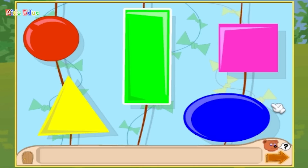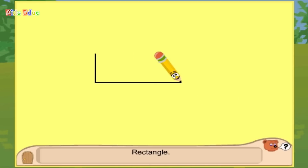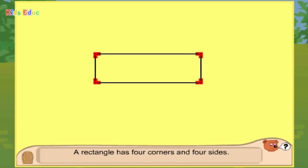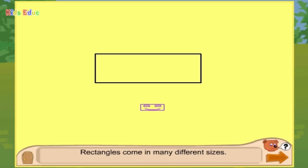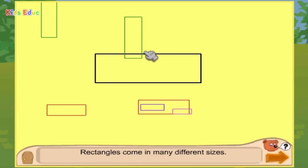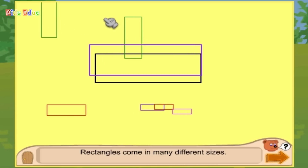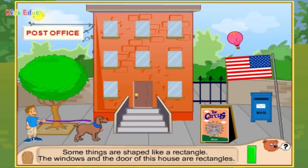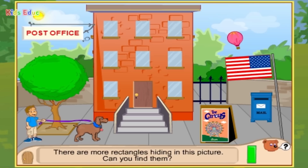Rectangle. This is how you draw a rectangle. A rectangle has four corners and four sides: one, two, three, four. Great! Rectangles come in many different sizes. Some things are shaped like a rectangle. The windows and the door of this house are rectangles. There are more rectangles hiding in this picture.